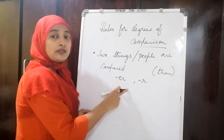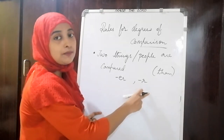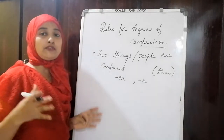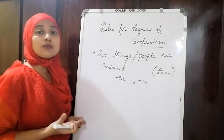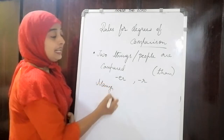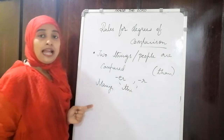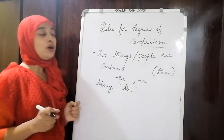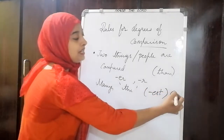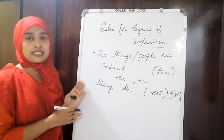The comparative degree is formed by adding -er, and if the word is ending with an E, you simply add R. For superlative degree, used when comparing many, you add -est or simply -st depending upon the word, and you use 'the' along with the superlative adjective.